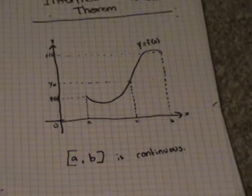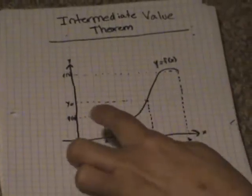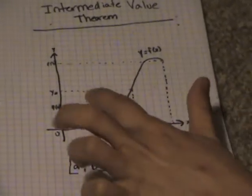continuous of any function y = f(x). This is our y = f(x), and this is a and this is b, and it's continuous all the way through.